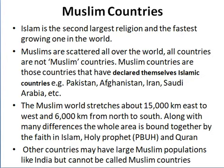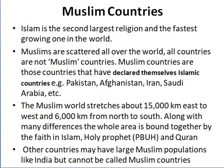As we are going to study the Muslim world, we are going to see the characteristics of Muslim world. Islam is the second largest religion and the fastest growing religion in the world. Muslims are scattered all over the world. All countries are not Muslim countries. Muslim countries are those that have declared themselves as Islamic countries — for example, Pakistan, Afghanistan, Iran and Saudi Arabia. The Muslim world stretches about 15,000 km east to west and 6,000 km from north to south.